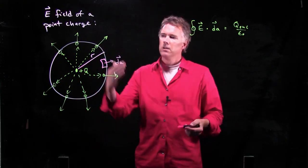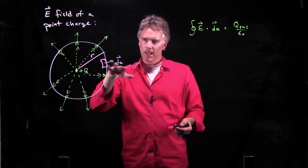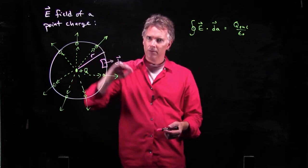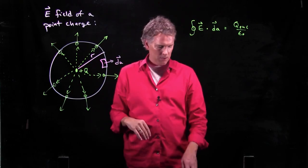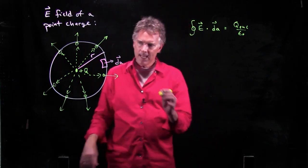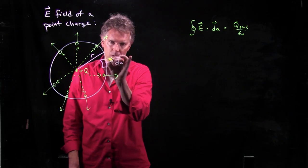But an area has a particular direction to it, and that direction is always perpendicular to the plane of that surface. So if you have a little piece of this sphere, dA is going out, which is good.